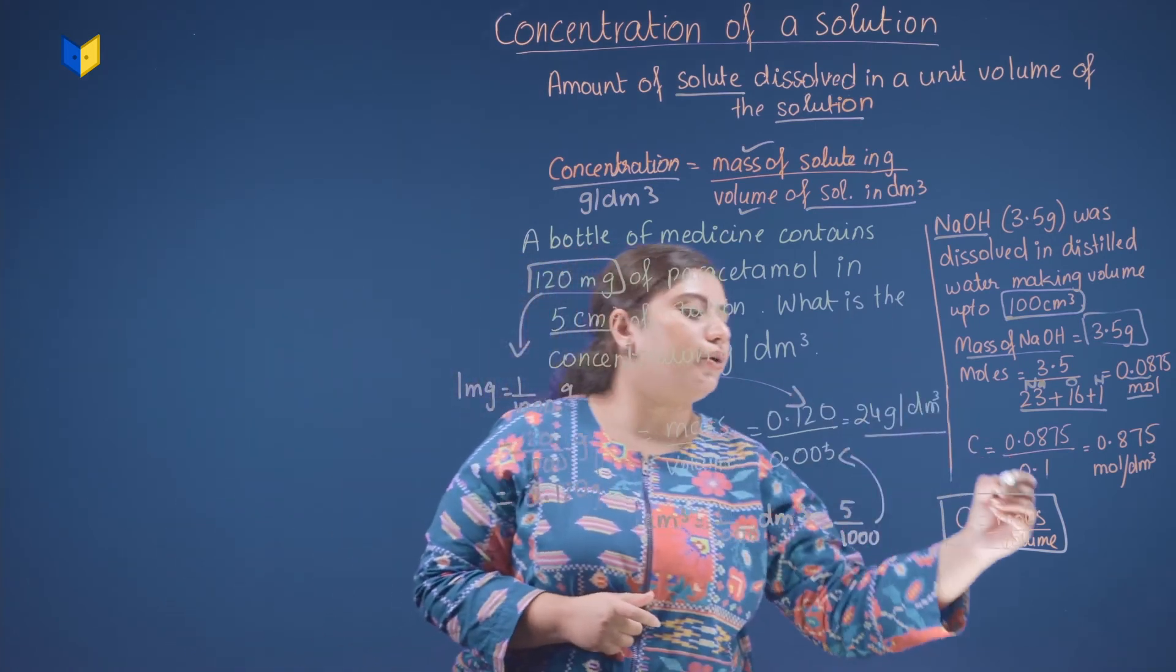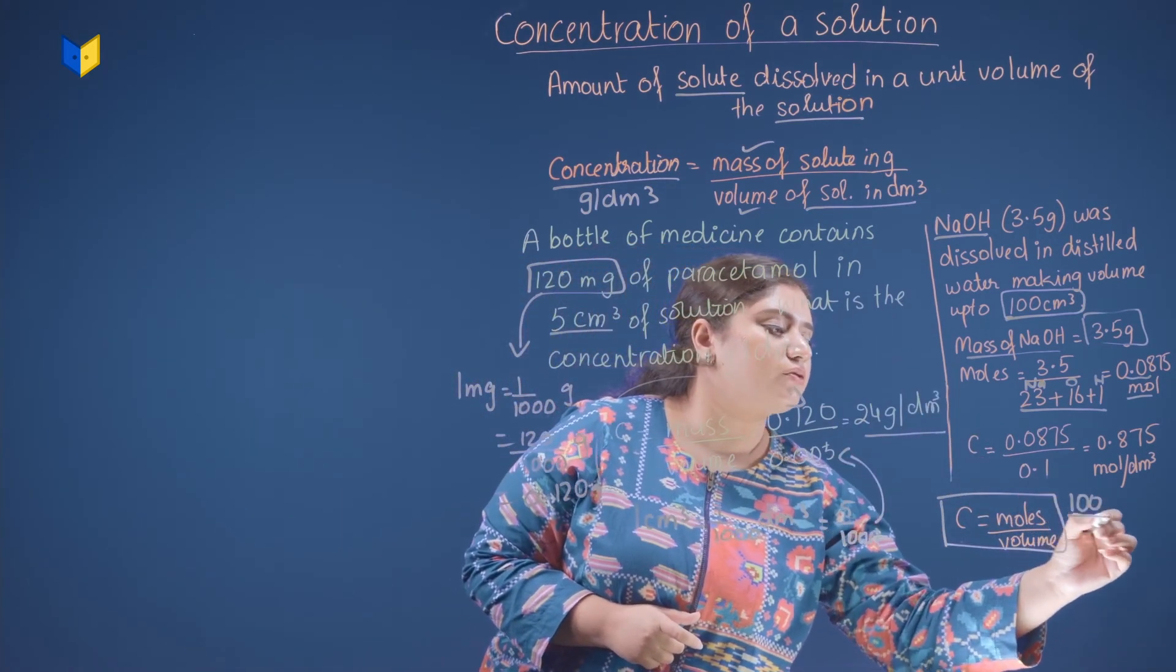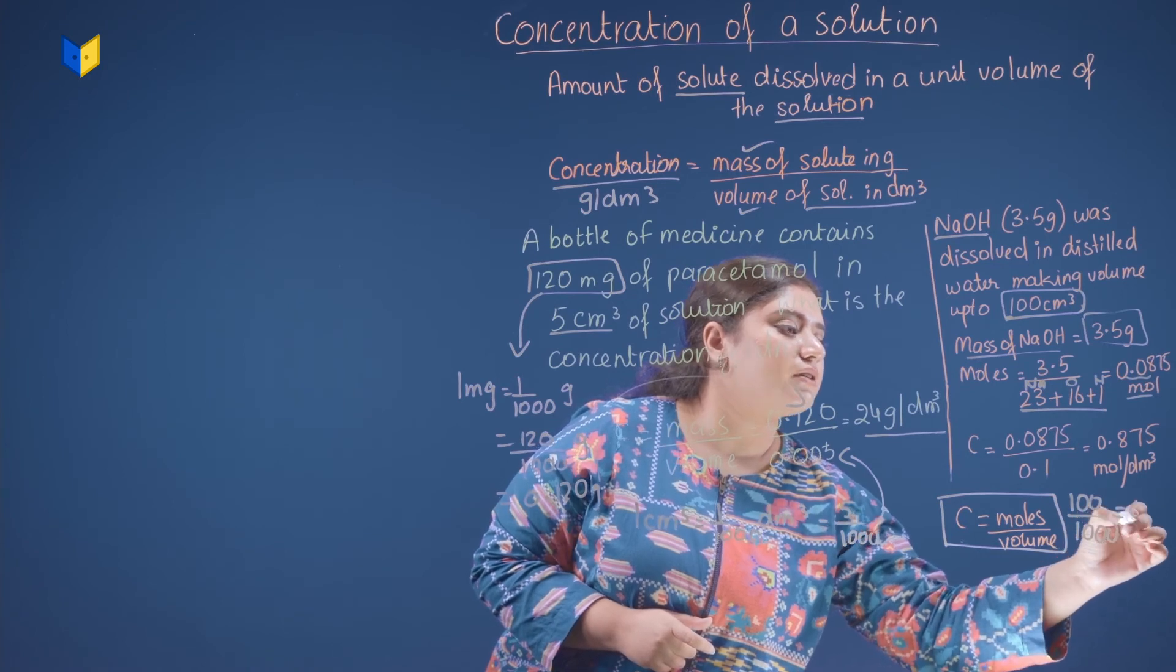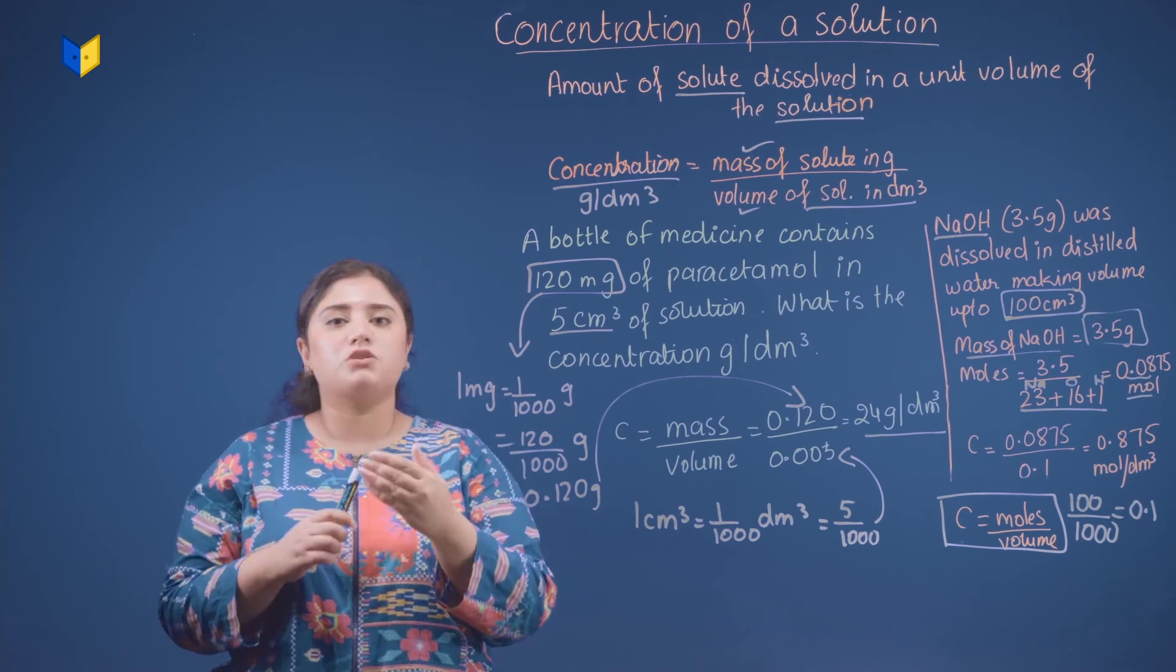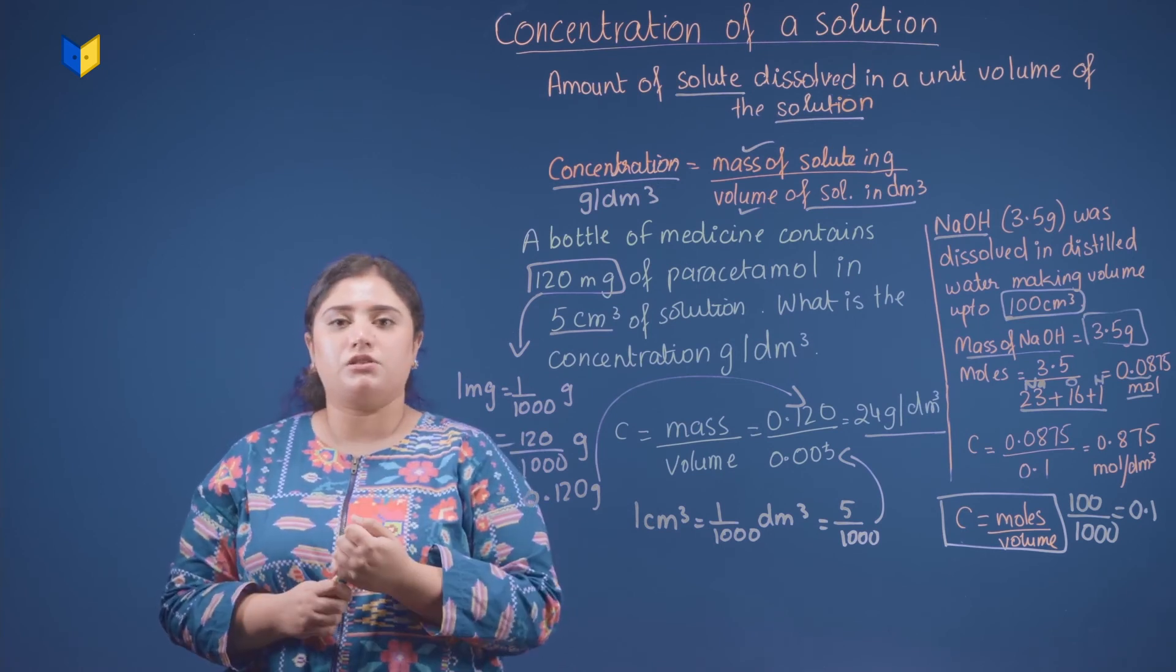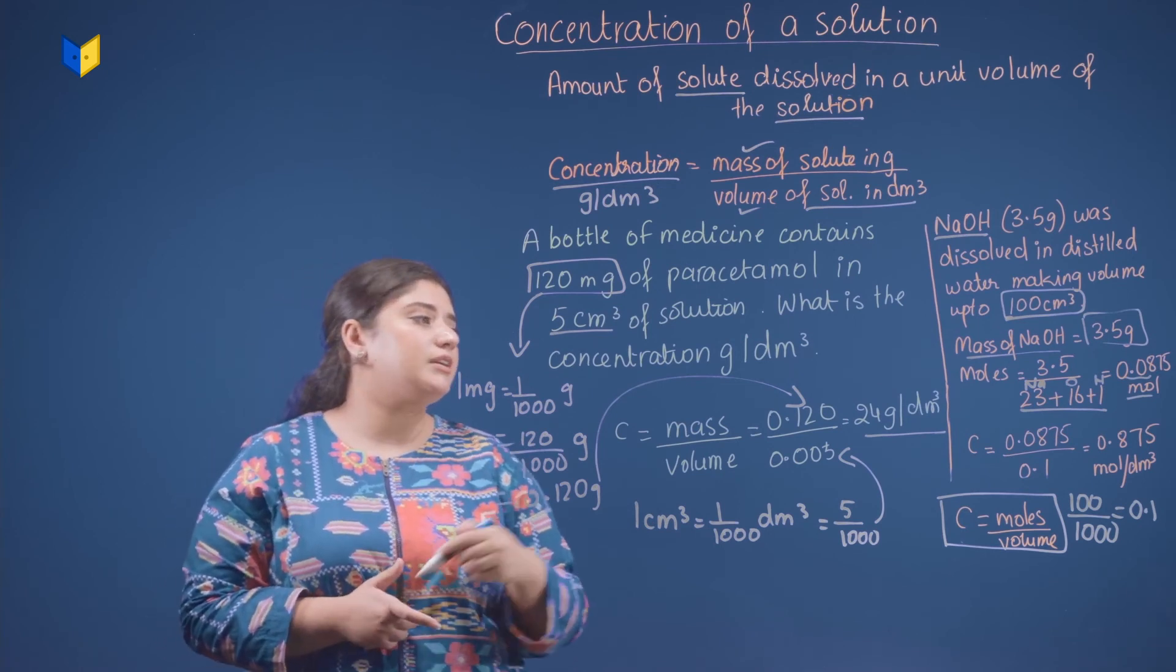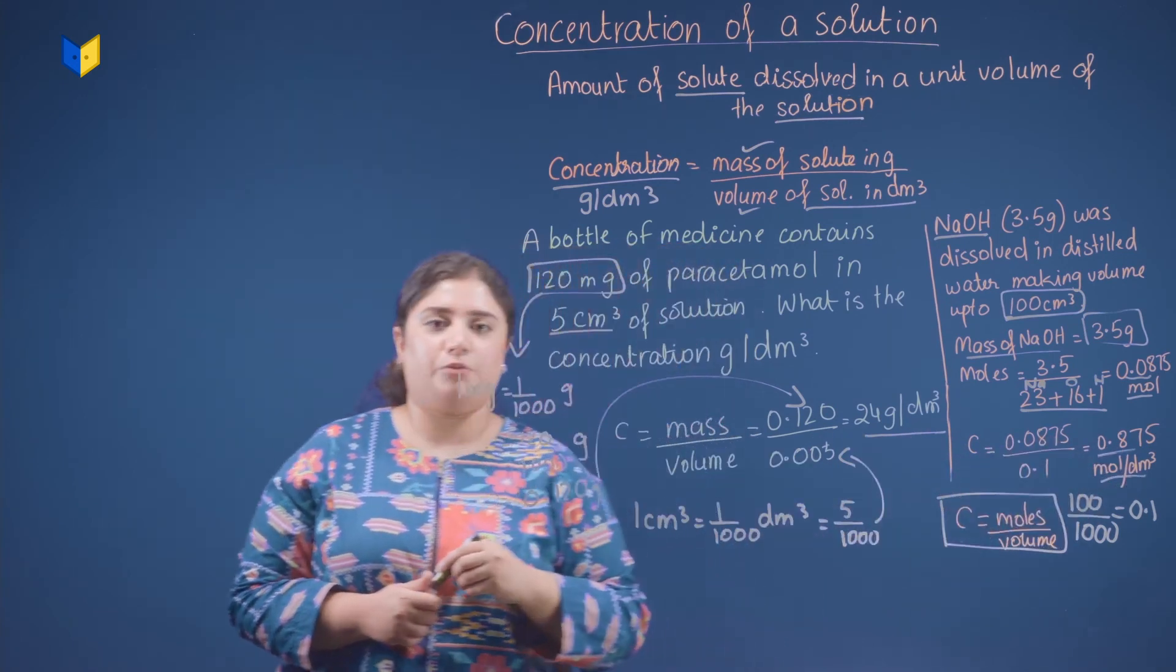So when you're going to convert 100 divided by 1000, you're going to get 0.1. So you're going to divide moles by volume and you're going to get the concentration, that is 0.875 mole per dm cube.